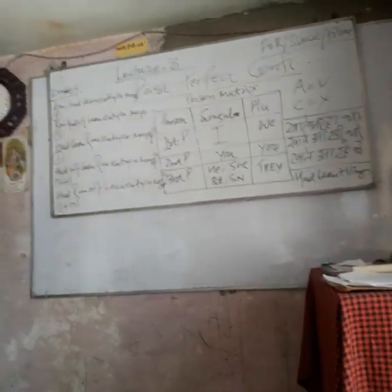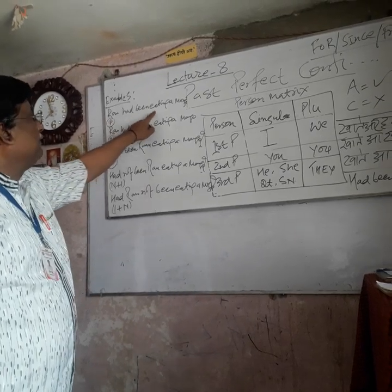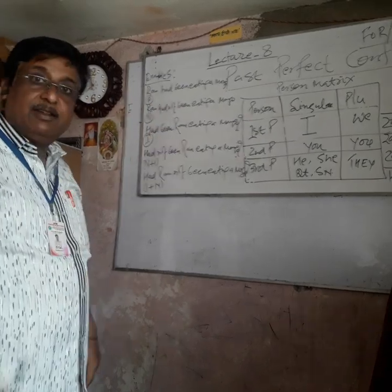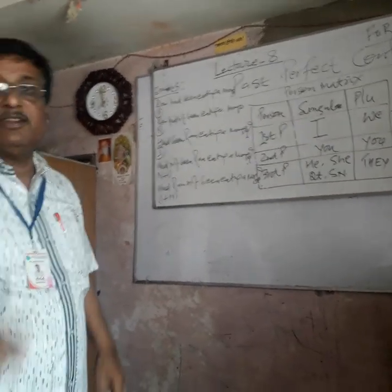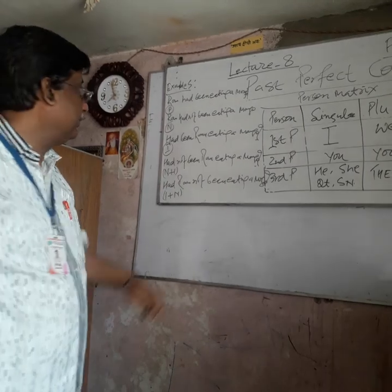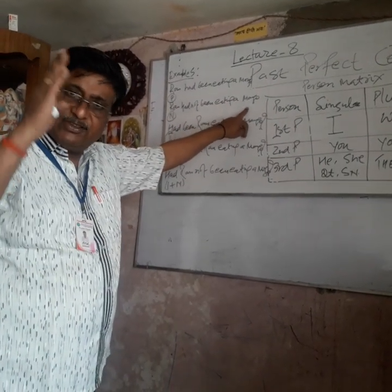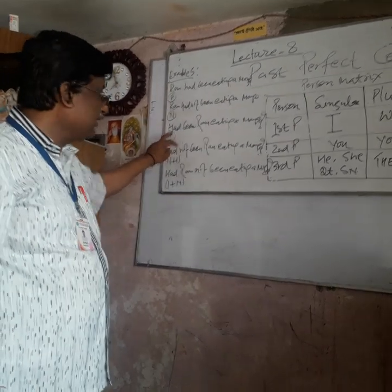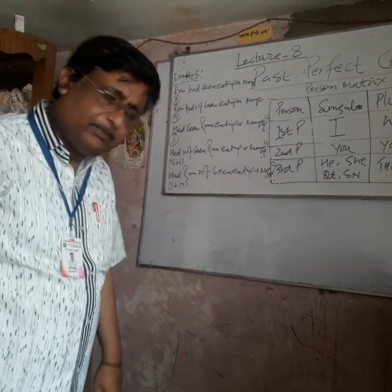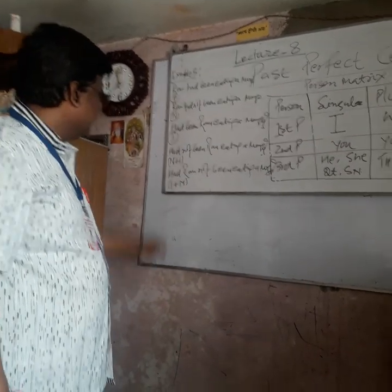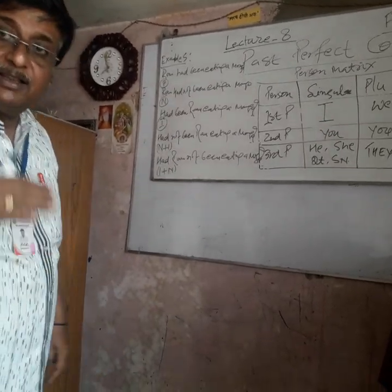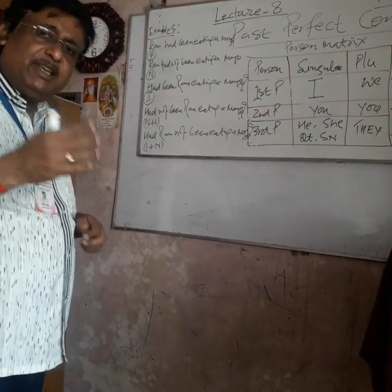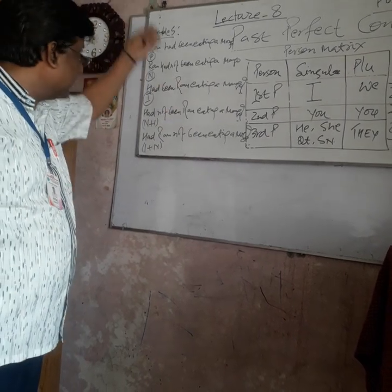Here I am giving examples. Positive sentence: 'Ram had been eating a mango.' Negative sentence: 'Ram had not been eating a mango.' Interrogative sentence: 'Had Ram been eating a mango?' And negative plus interrogative: 'Had Ram not been eating a mango?' — that is the interrogative plus negative.